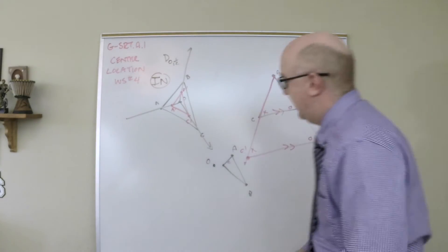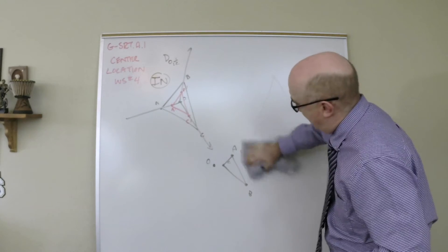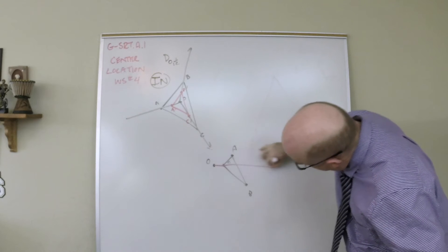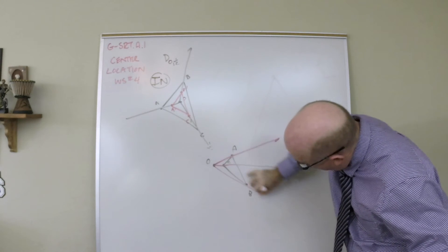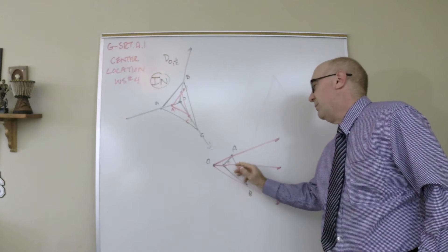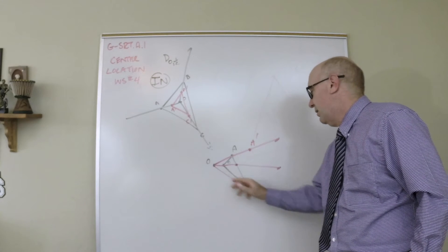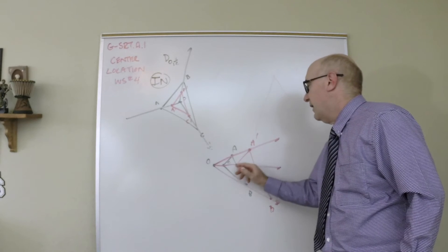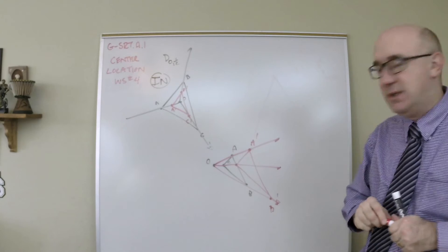And then down here, if we want to dilate using a point outside of it, this is the one we've already been doing a little bit, but the idea is you form your rays out of the center of dilation. And then again doubling, so that probably puts C prime here, A prime somewhere in here, B prime somewhere down here.